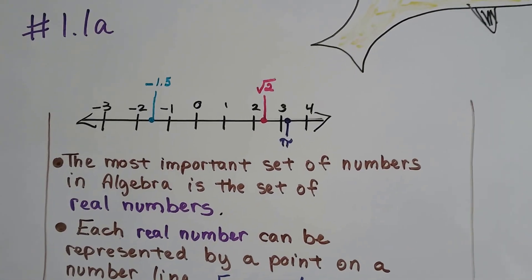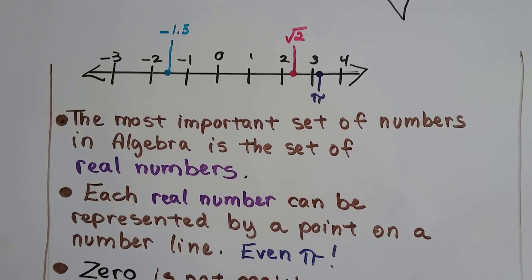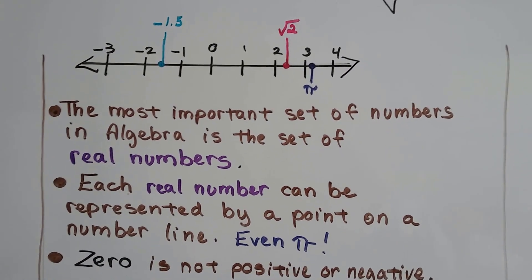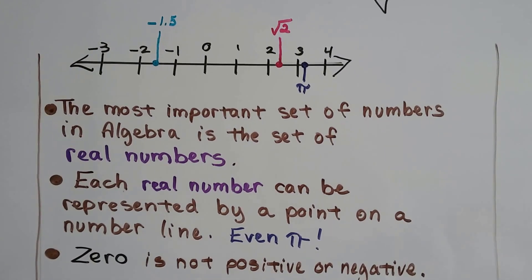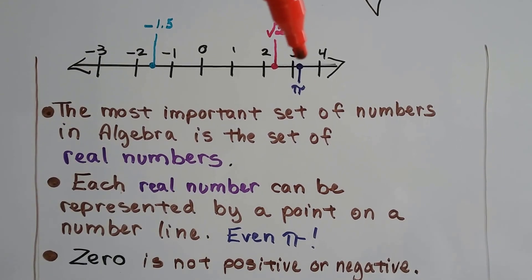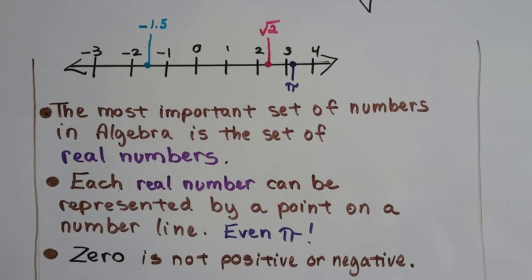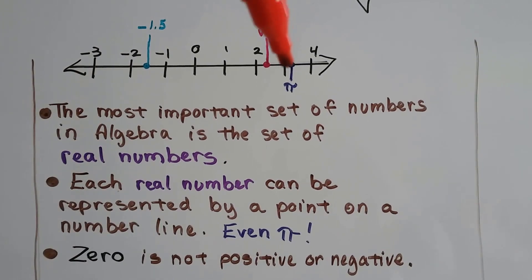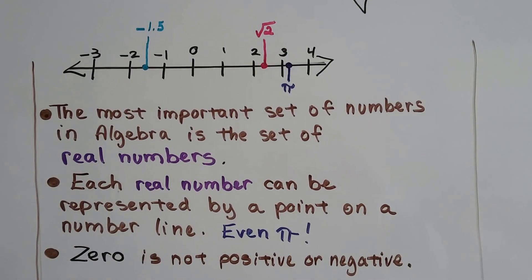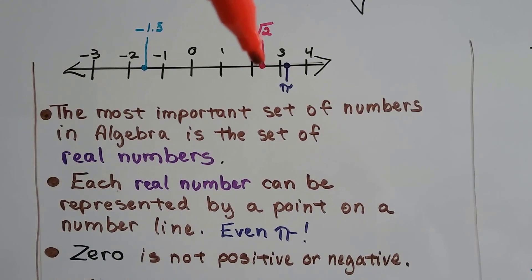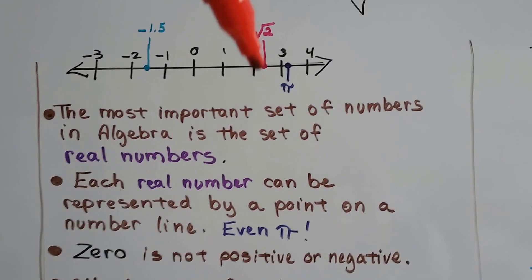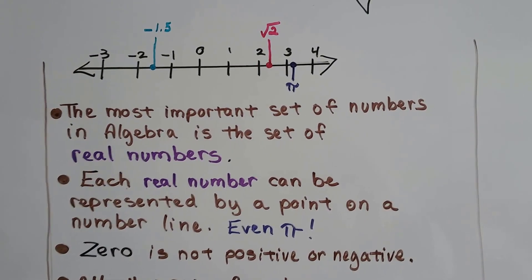The most important set of numbers in algebra is the set of real numbers, and each real number can be represented by a point on the number line, including pi, which is right here. Even though pi doesn't repeat and seems to go on forever, we know it's approximately right here on the number line.